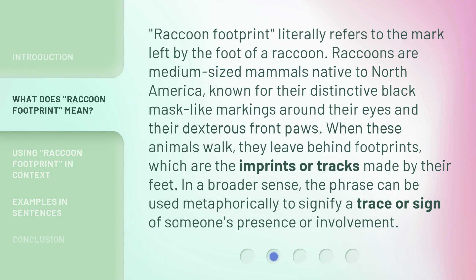Raccoon Footprint literally refers to the mark left by the foot of a raccoon. Raccoons are medium-sized mammals native to North America, known for their distinctive black mask-like markings around their eyes and their dexterous front paws. When these animals walk, they leave behind footprints — the imprints or tracks made by their feet. In a broader sense, the phrase can be used metaphorically to signify a trace or sign of someone's presence or involvement.